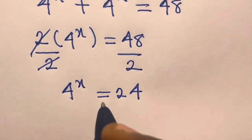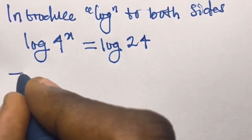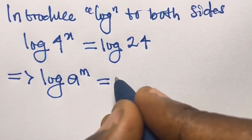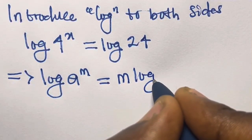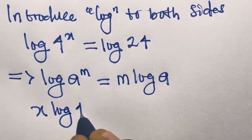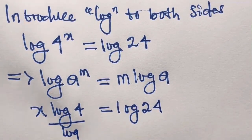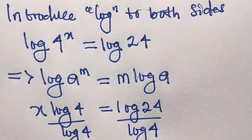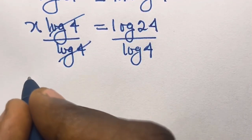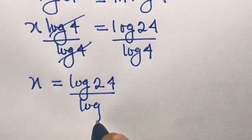4^x equals 24. From here we introduce log to both sides. Recall that log of L to the power m equals m times log L. Applying this, we get x·log 4 equals log 24. Dividing both sides by log 4 cancels it, giving x equals log 24 divided by log 4.